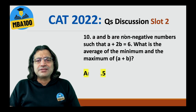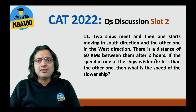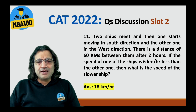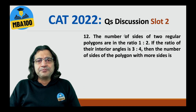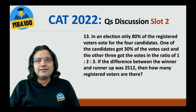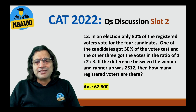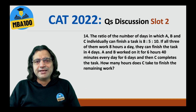Here the answer is 4.5, almost all of you got it right. Probably one of the sitters of the paper and the answer is 18 km per hour. The answer is 10. This one was also quite simple, answer is 62,800.